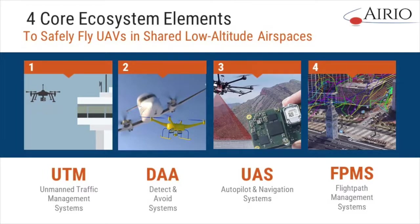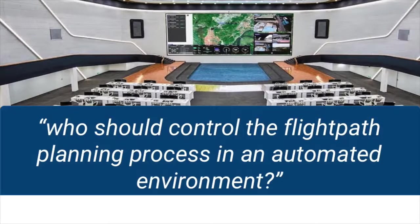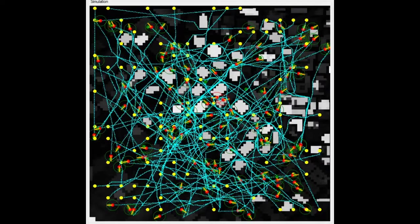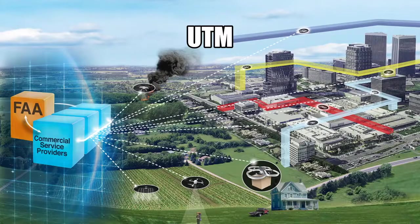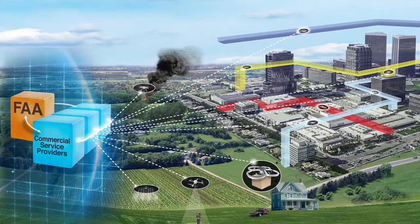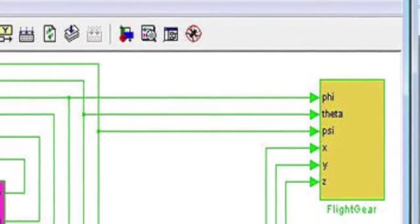So we reframed our thinking around the question: who should control the flight path planning process in an automated environment? Today, the pilot controls the flight path, but as we develop greater autonomy, systems will have to control it. We initially started thinking that UTM would handle flight path planning, but that puts a lot of responsibility for managing the entire airspace on a single system. Also, the UTM tends to see the world as risk, so it focuses on constraints. Drone operators want to focus on the mission objectives, and constraints tend to make that job harder. If the flight path is well designed in the first place, it may not need to be overly constrained.